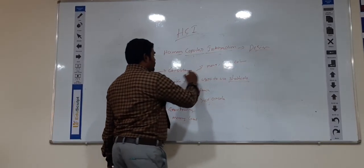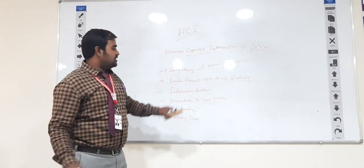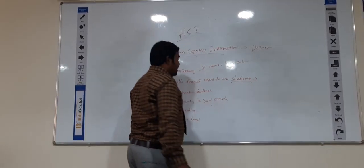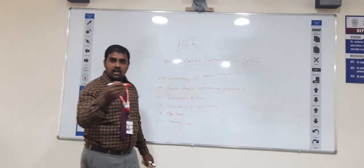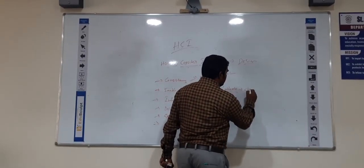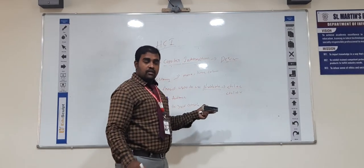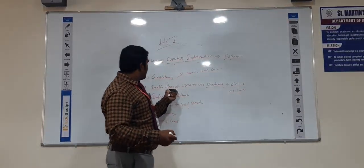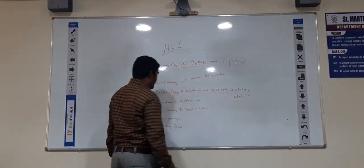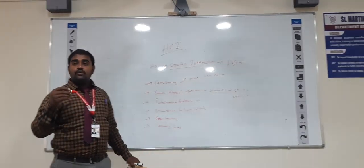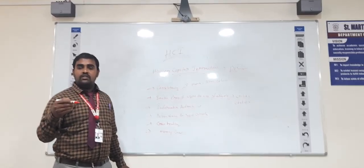First one is consistency. Consistency means we are properly manipulating menus, icons, and colors. Suppose if we are automatically using these items — that is menus, icons, and colors — we can call it as the design of consistency. Enabling frequent users means if we know about that application, we can utilize shortcut things like Ctrl+C for copying. If we frequently use that application, we have to know some shortcut things.